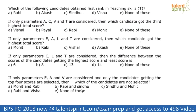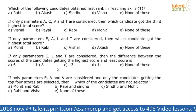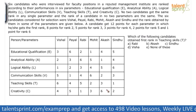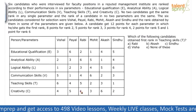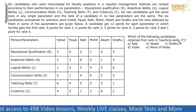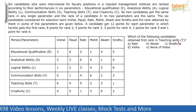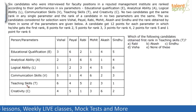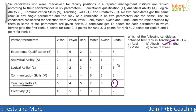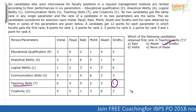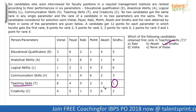Now let us look at the questions. Question 1: Which of the following candidates obtained first rank in teaching skills? Looking at the teaching skills row, the candidate with rank 1 is Sindhu. So Sindhu is the answer — option C. Once you have done the table, this question takes essentially zero seconds. Similarly, you can quickly answer who got third rank in analytical ability (Payal) or who got first rank in creativity (Rabi).